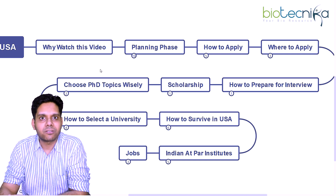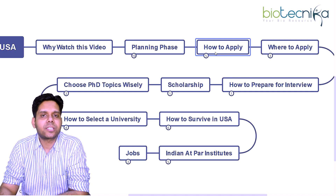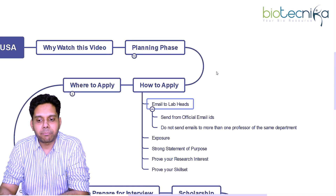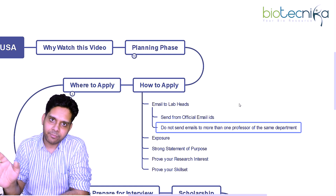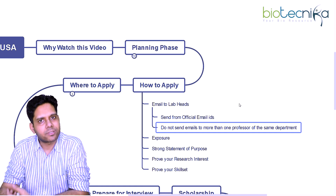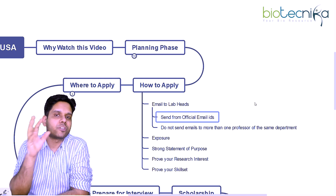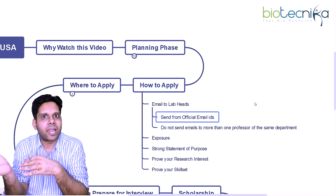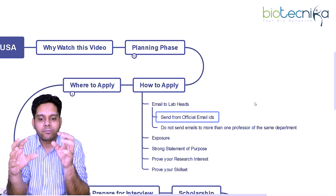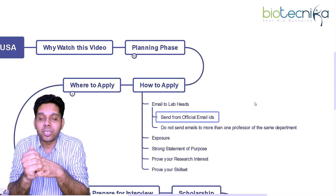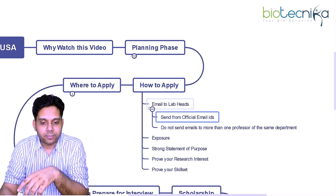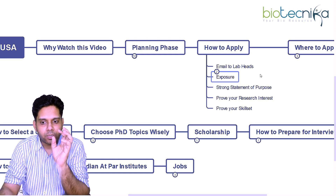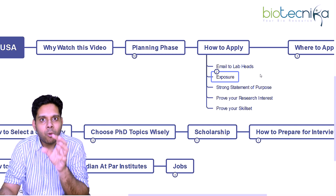Next, the question is how to apply. A very important thing: you have to email lab heads or university professors, but please don't spam them. Do not send emails to every professor in the same department — one professor per department per university is more than enough. Please send it from your official email ID, not a generic one. Some universities have strict rules where generic Gmail ID emails may land in spam.